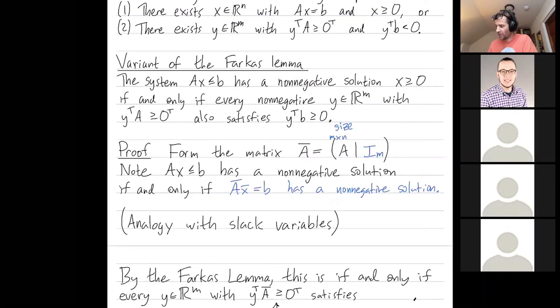So item two being not satisfied means every y with y transpose A bar non-negative satisfies that y transpose B is non-negative.